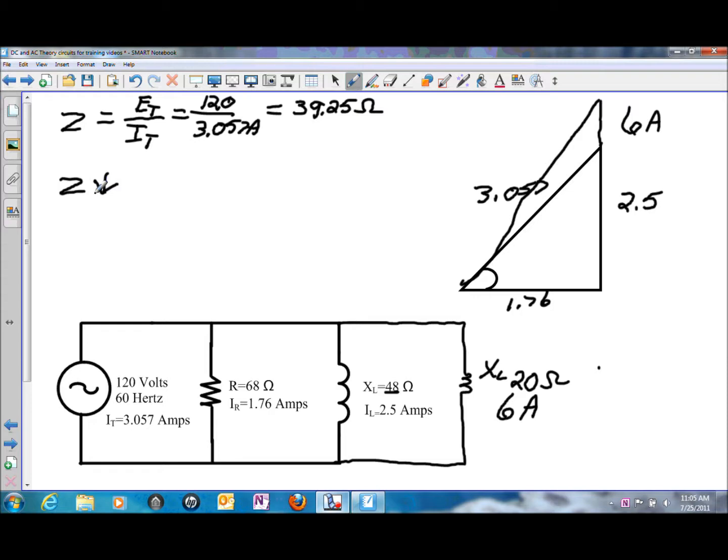You can combine the inductive reactances using the reciprocal formula or product over the sum. So if we were to combine them, the combination of those two, whatever that total is, is going to be some value less than 20.